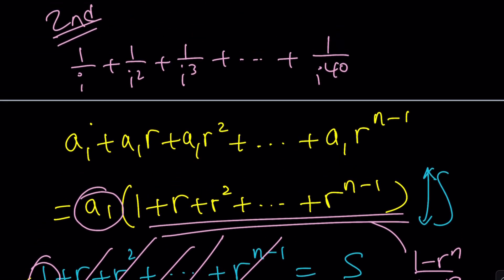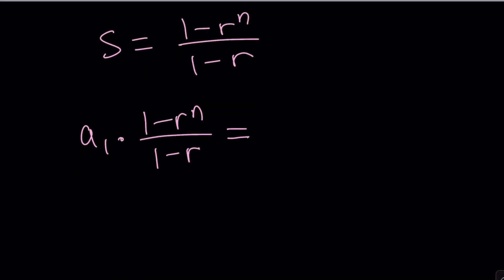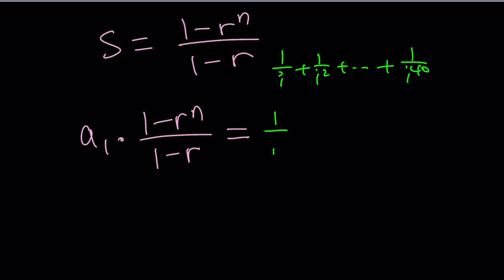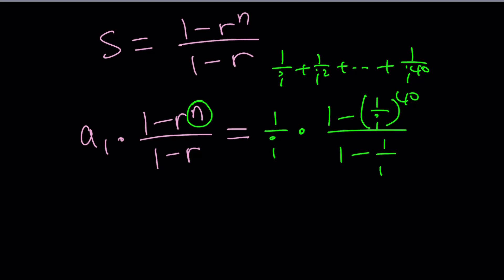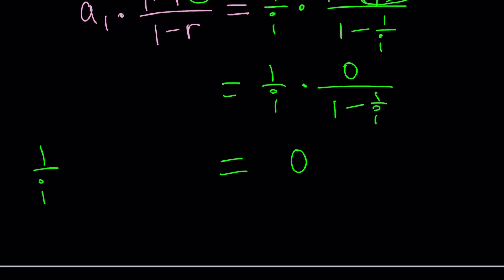N is the number of terms, which is 40. This simplifies to 1 over I to the 40. But I to the 40 is 1, remember? So that gives us 1 minus 1, which is 0 in the numerator. We already get 0 — no further simplification needed. These other terms are non-zero, so our sum is equal to 0 one more time.